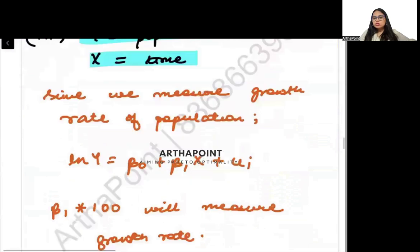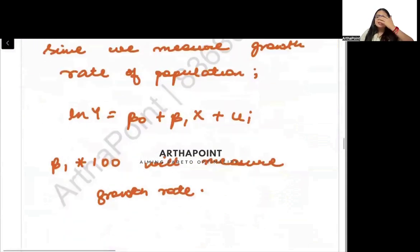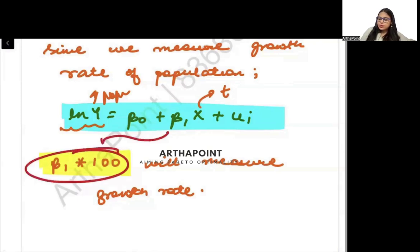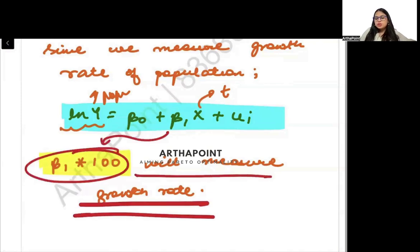Since we're talking in terms of growth rate, we can go ahead and use a log-linear model where X represents the time period and Y represents the population. And we know that in such cases, beta 1 times 100, this value will give a good measure of the growth rate. So this is how you can use the different models.